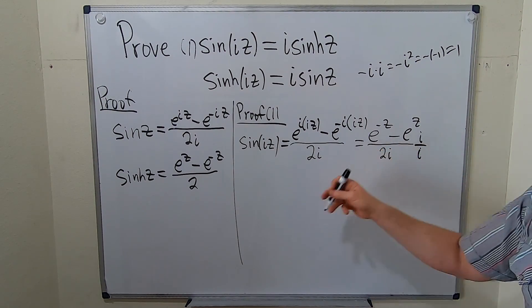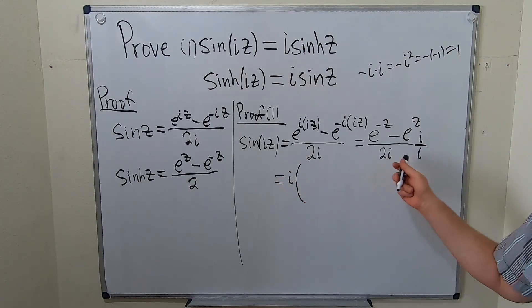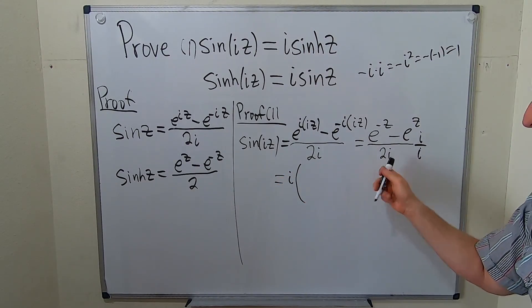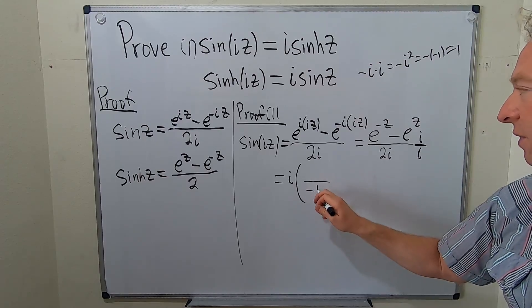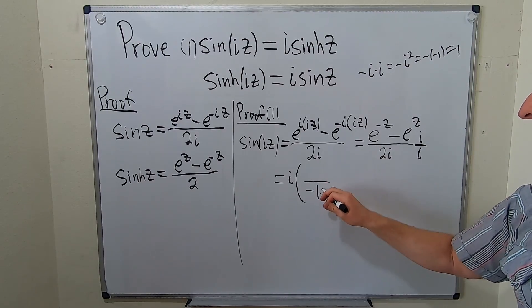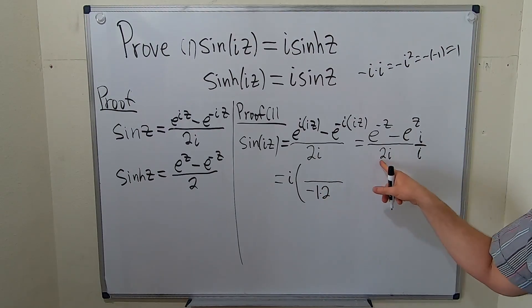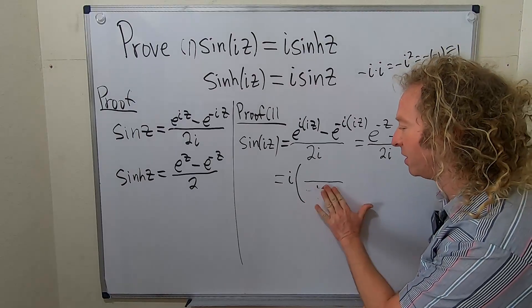And what that does is it allows us to do some math. So I'm going to put this i on the outside. And this i times this i gives us i squared. So it becomes negative 1. And then we have a 2 here, so maybe I'll just put negative 2.